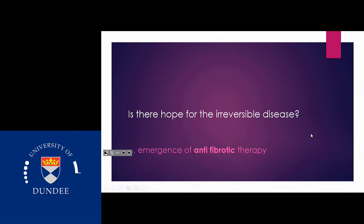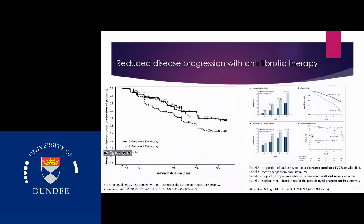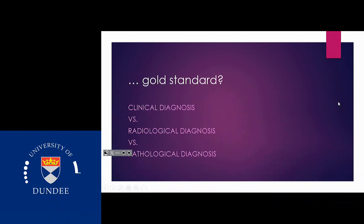The presence of traction bronchial dilatation is a very strong prognosticator of a worse outcome. It has been shown that if there's a lot of ground glass opacification, patients actually respond to treatment better — there's probably an underlying reversible element. So is there hope for the irreversible disease? There is: the emergence of antifibrotic therapy has been shown to slow down the progression of the fibrotic element. Studies from Japan, the CAPACITY study, and the ASCEND multinational study all showed that a drug called pirfenidone — with another drug now competing — produces better outcomes, slowing the degree of disease progression once treatment is commenced.